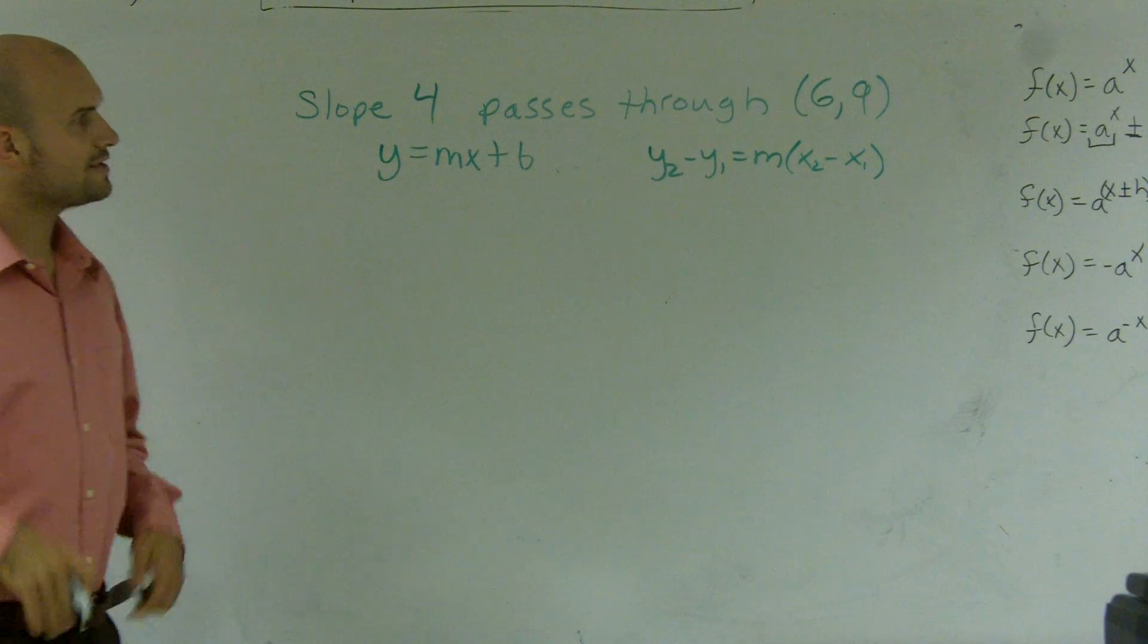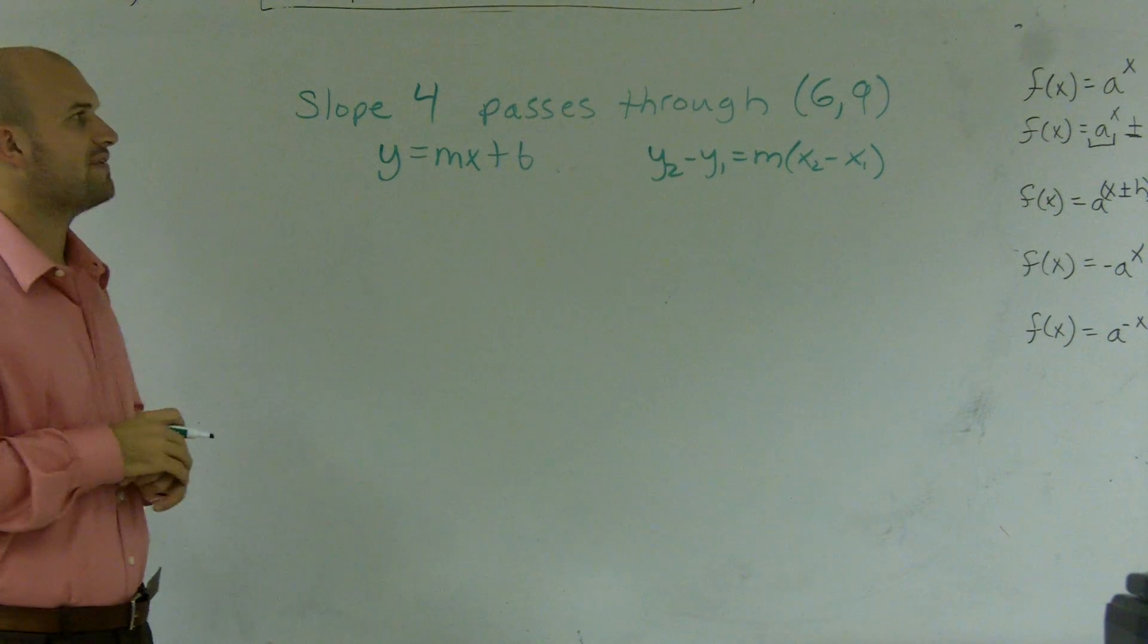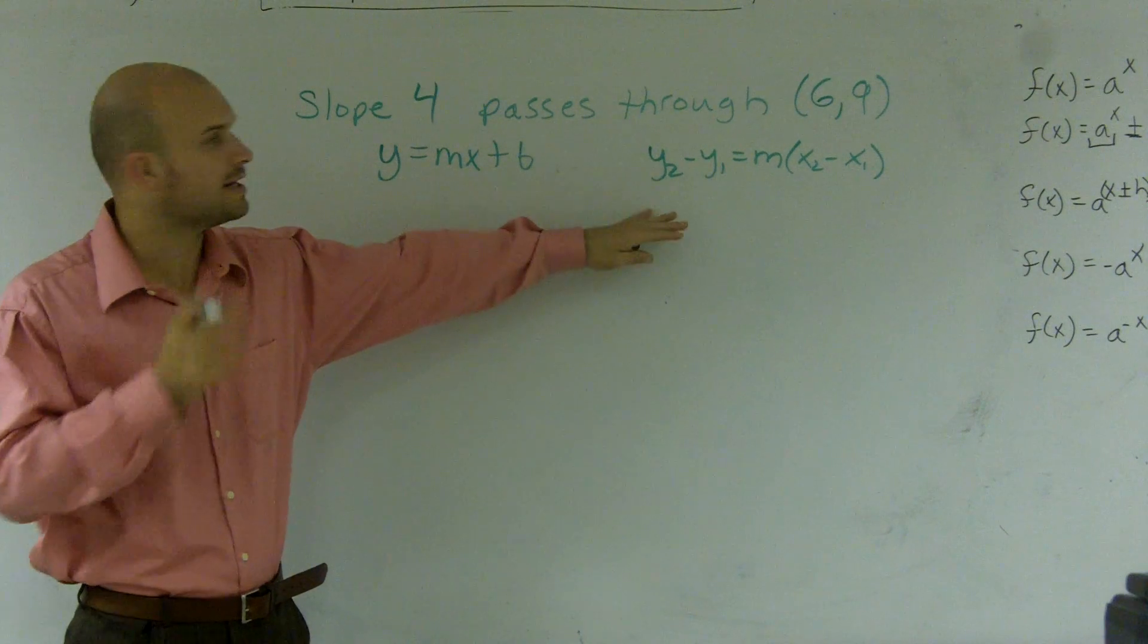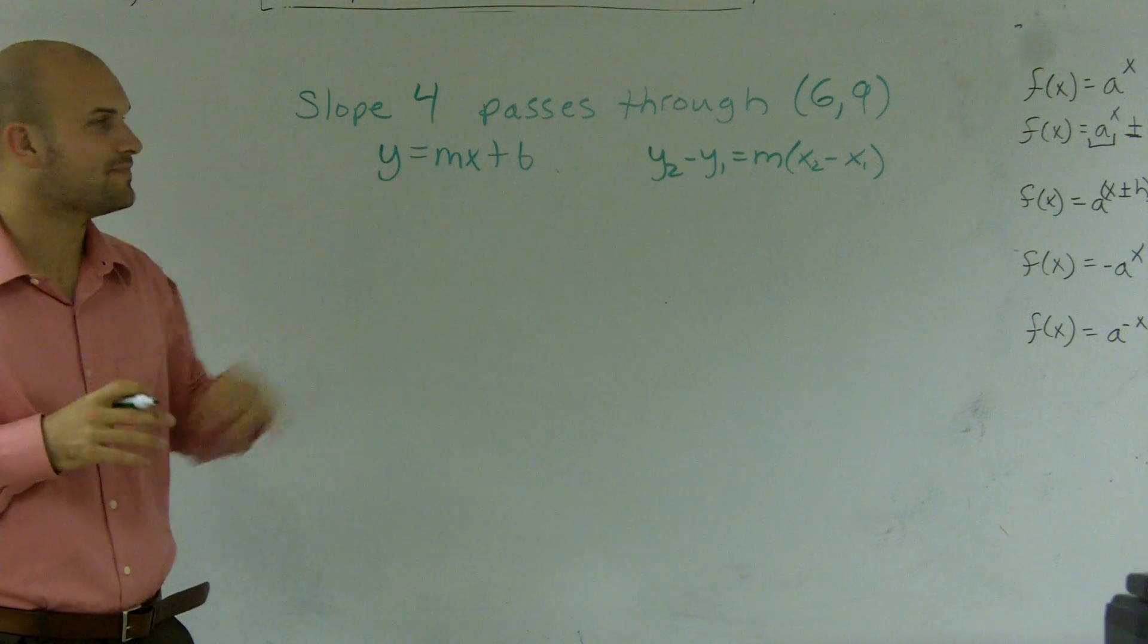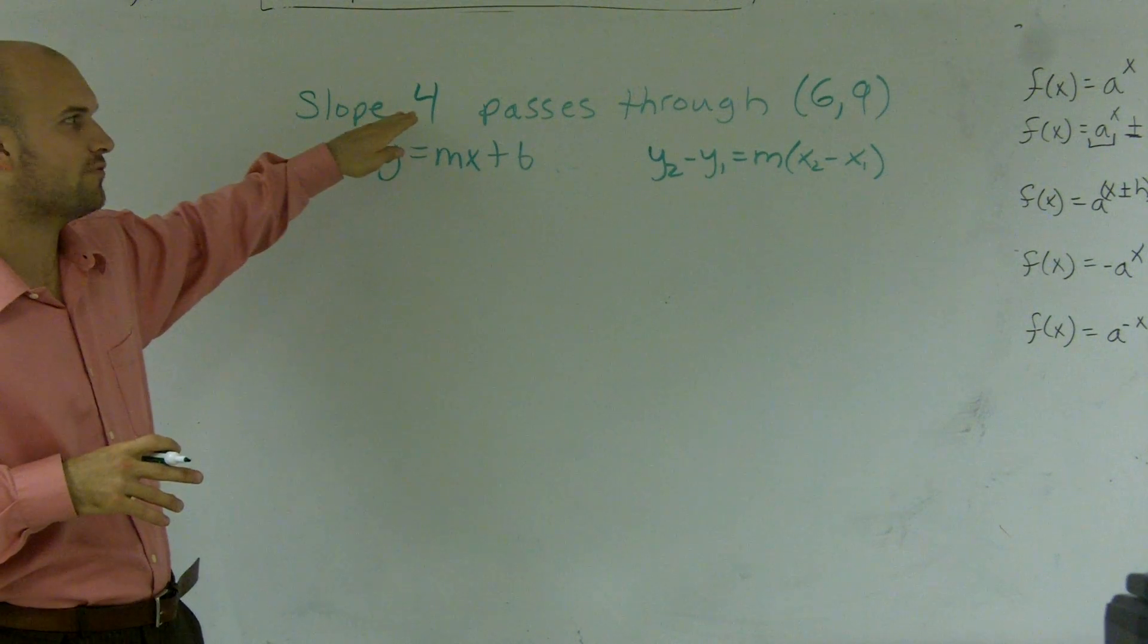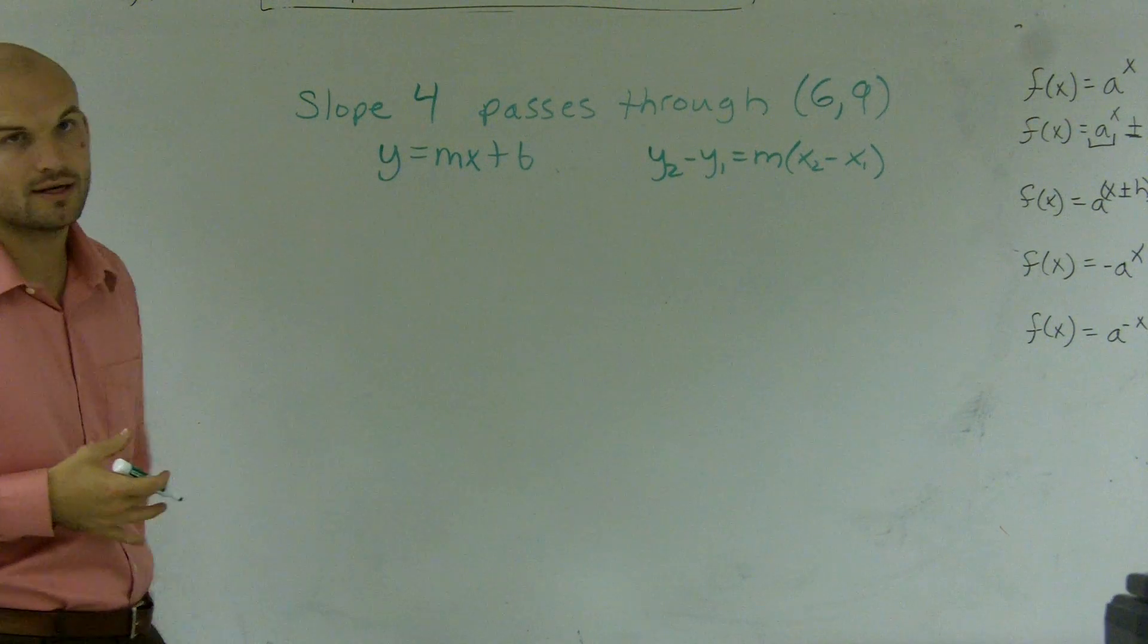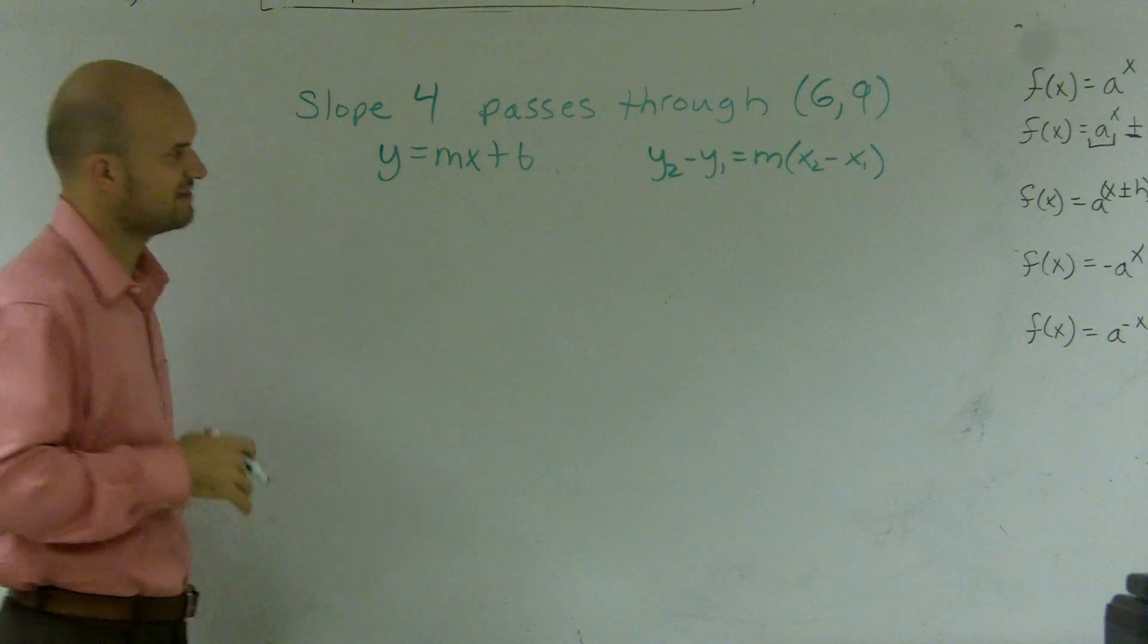So either way you want to use it is perfectly fine. For this example, I'm going to show you how to find it using the point-slope form. So what we have is our slope is 4. So therefore, on this video, I'm going to show you the other way. I'll show you how to do it in y equals mx plus b form.